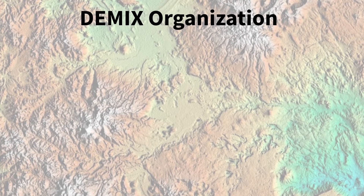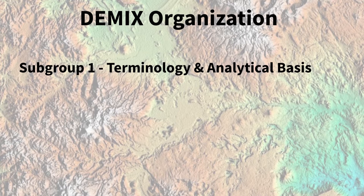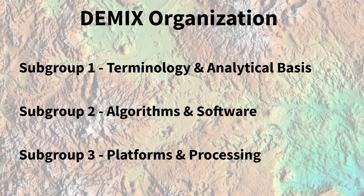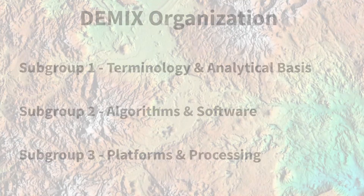The first point on the agenda of TMSG was DEMIX, with the scope to undertake a state-of-the-art comparison of all major global DEMs and provide guidance for their usage. To tackle this, we distributed the various tasks over three subgroups, which convene regularly every two to three weeks via teleconferencing. Subgroup 1 provided a comprehensive and consistent terminology and made sure we had a common analytical basis. Subgroup 2 is in charge of algorithms and software to deliver the desired results. And subgroup 3 ensures that anyone has access to data and computing resources. With this, I hand over to Peter Goetz to tell you more about subgroup 1.